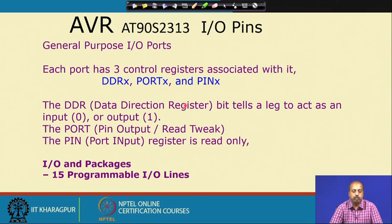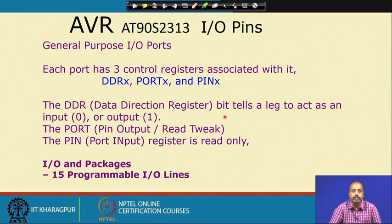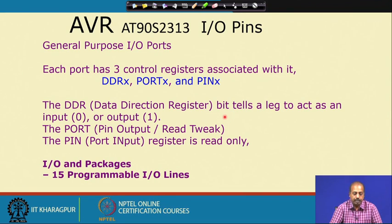For the I/O pins, these are general purpose I/O ports and each port has three control registers associated with it: DDRX, PORTX, and PINX. The DDR register is the data direction register — it tells whether a pin will act as an input pin or an output pin. If the bit is 0 it will be an input pin, and if the bit is 1 in the DDR register it will act as an output pin. The PIN register is read only.